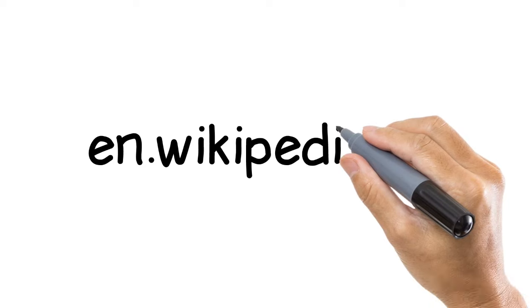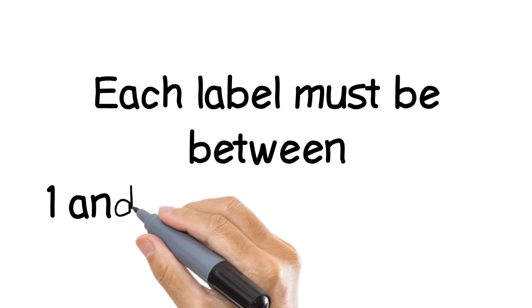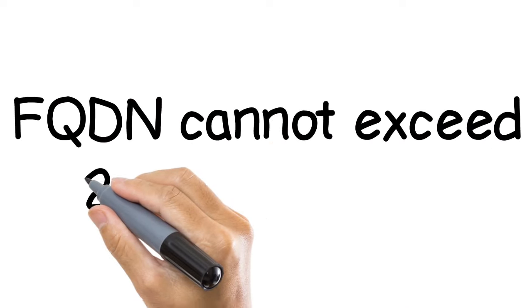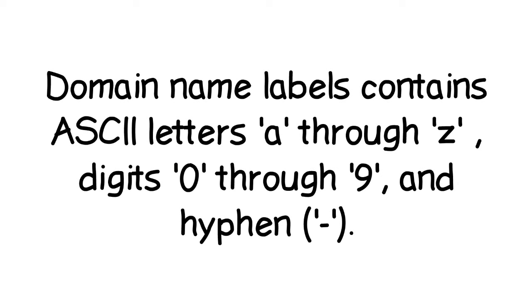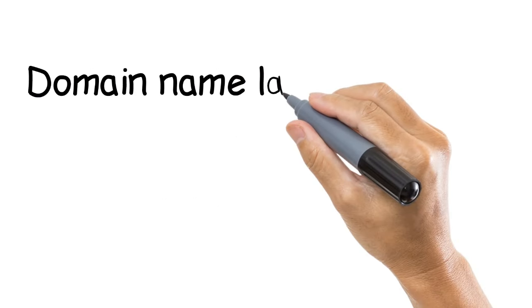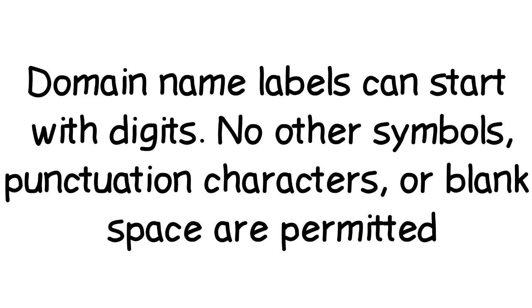Regarding Fully Qualified Domain Name restrictions: a domain name consists of a series of labels which are concatenated with dots. Each label must be between 1 to 63 characters long. A Fully Qualified Domain Name cannot exceed 255 characters. Labels may contain letters, digits 0 through 9, and a hyphen. Labels such as 2600 and 3abc may be used in hostnames, but labels with certain formats are invalid. Domain name labels can start with digits, but no other symbols, punctuation characters, or blank spaces are permitted.